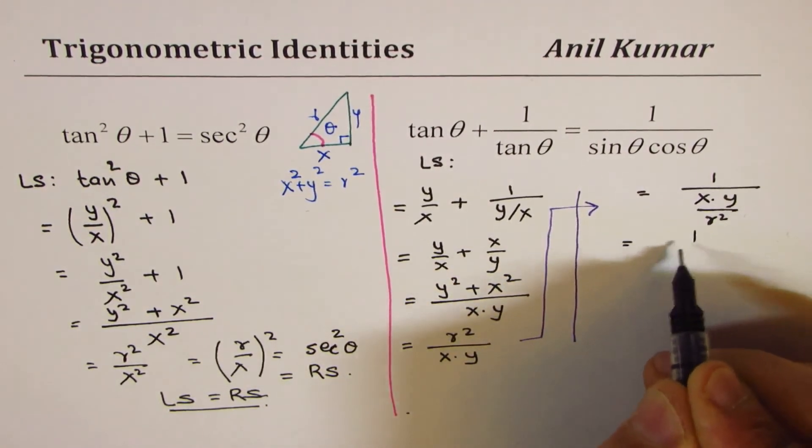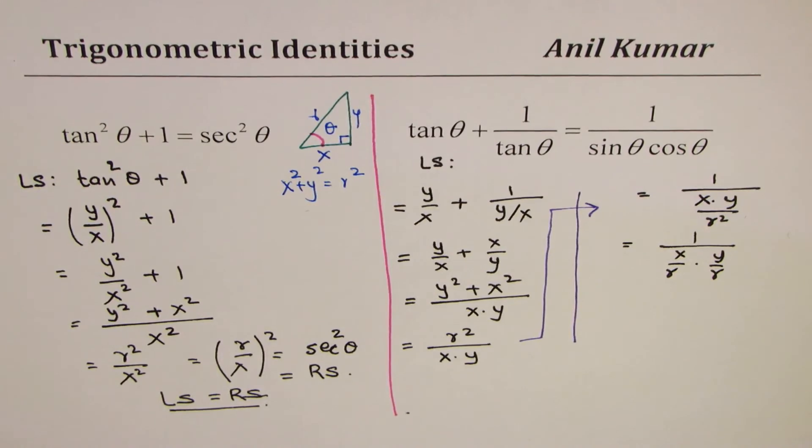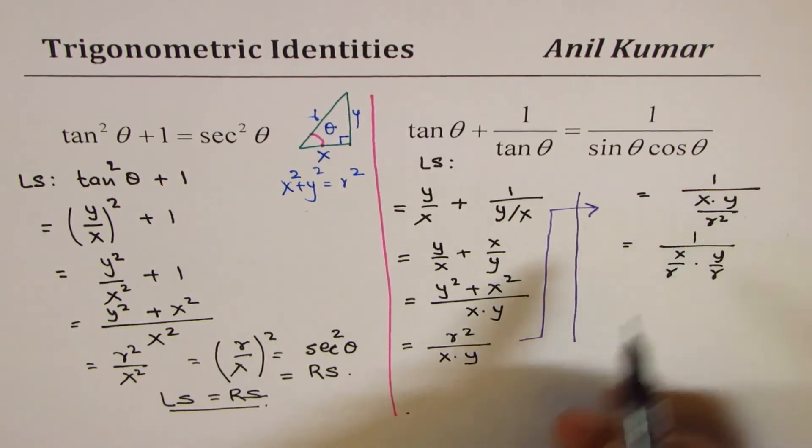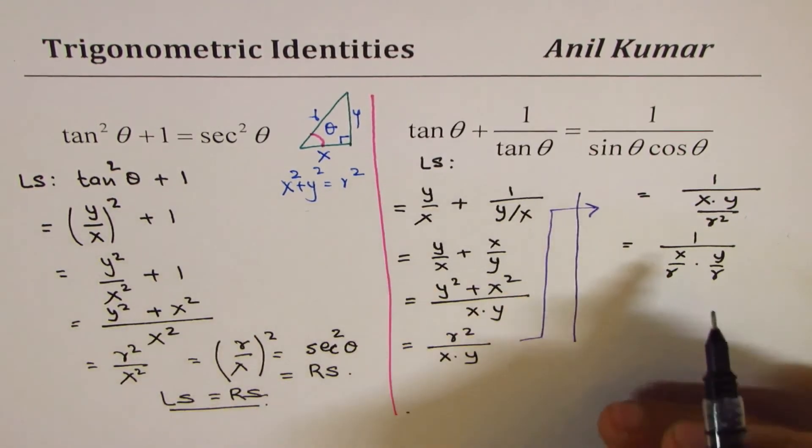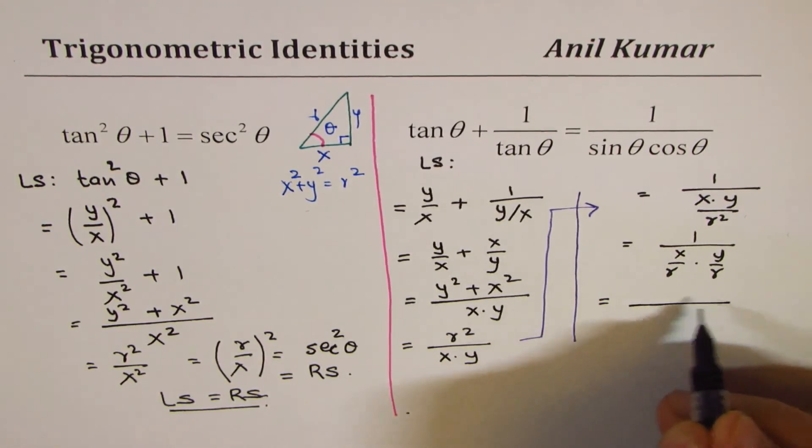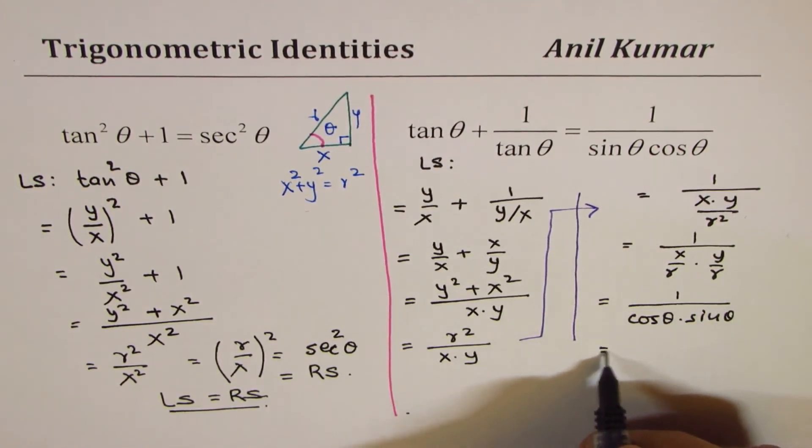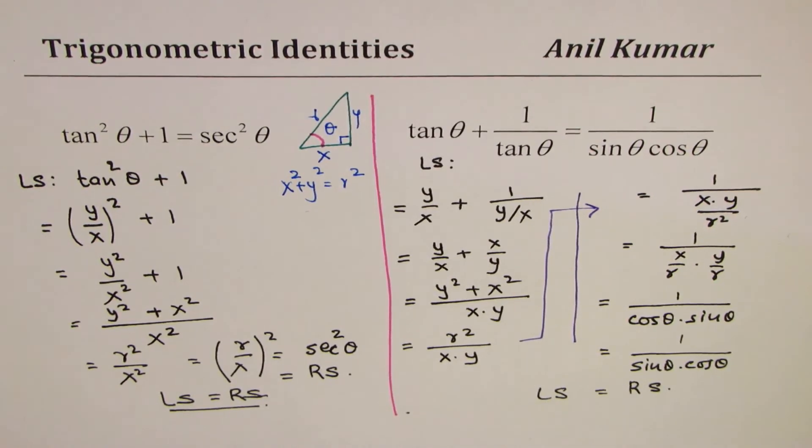1 over x over r times y over r. Does it make sense to you? So, we can divide both numerator and denominator by r squared. We'll get 1 here, and on this side, we get x times y divided by r squared. Now, what is x over r? x over r is cosine theta. So, we get 1 over cos theta times sine theta, which is y over r. And rearranging, we get sine theta times cos theta in the denominator. And that is the right side. So, we have shown how left side equals right side. This involves a few more steps.